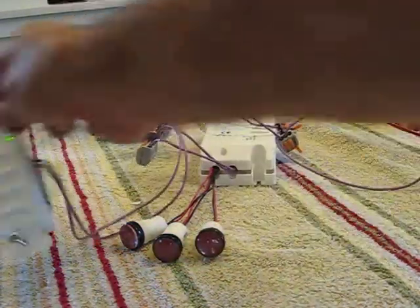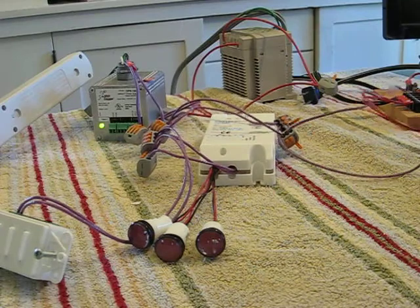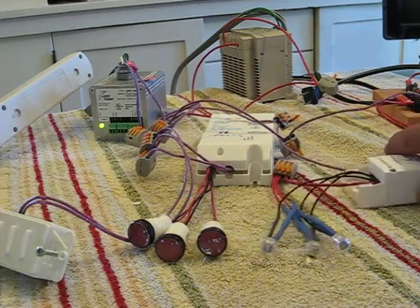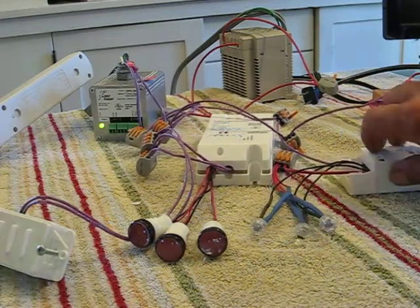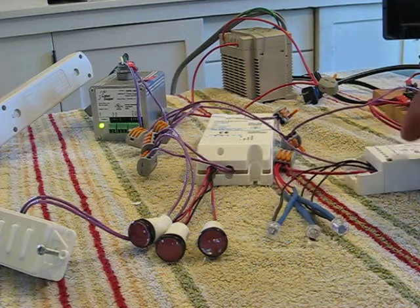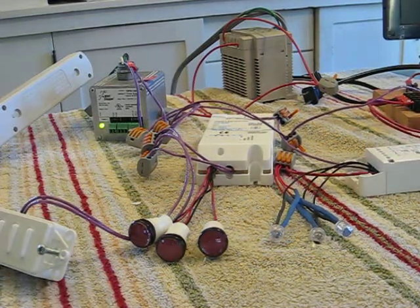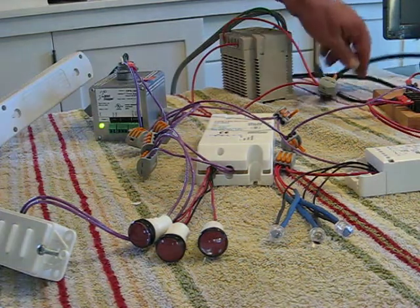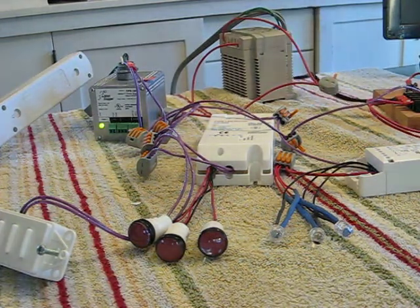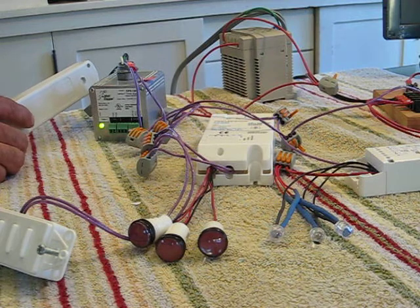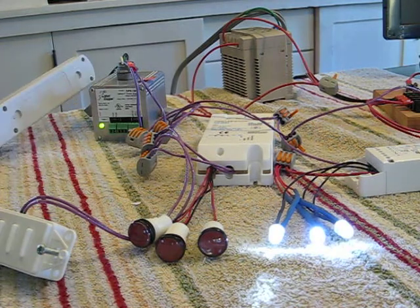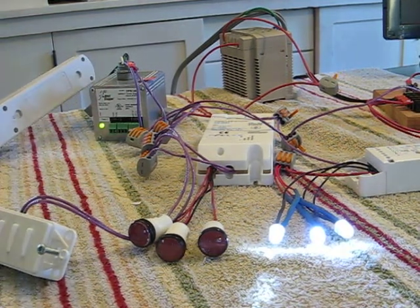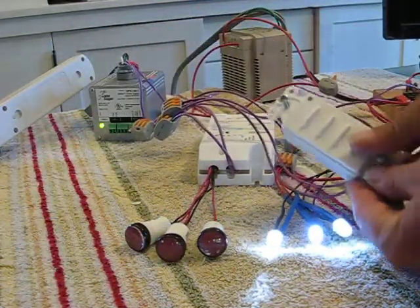Now, what happens if we add relays on this line? This is to show you some of the problems you might encounter using this device with a relay driver. We're going to power up the relay driver, and each of the white lights represents a relay. You can see that a broadcast command will affect them all.